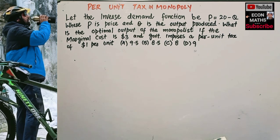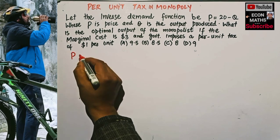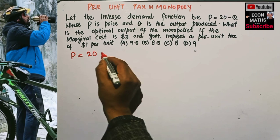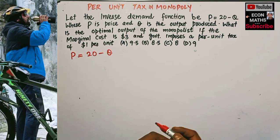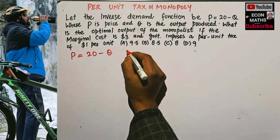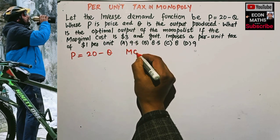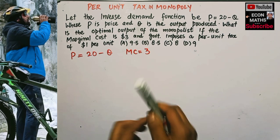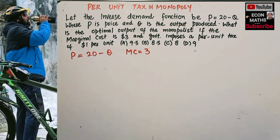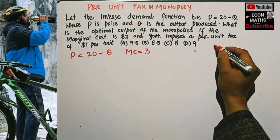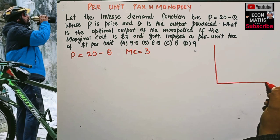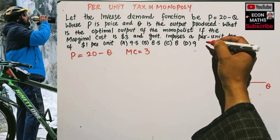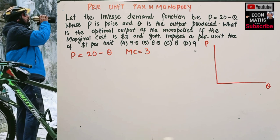What we are being given here is the inverse demand function p = 20 minus q. The marginal cost before the imposition of tax is $3. Let us see the equilibrium before the imposition of tax first. To make it more useful, let's draw a simple graph. On this side we have the quantity or output produced, and here we have the price and other stuff.